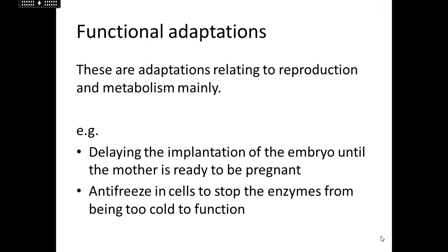Functional adaptations are ones the organism probably does without knowing — it's more about how the body works. For example, how the animal will reproduce or metabolise. Some species can actually delay or prevent a fertilised egg from implanting until the mother is ready. For example, it might be that they don't have enough food stored or haven't become mature enough yet.